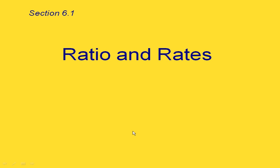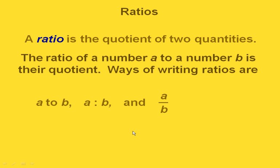This is section 6.1 about ratio and rates. A ratio is just the quotient of two quantities. If we're looking at the ratio of a number A to a number B, it's just their quotient. The number that comes first, the A, goes on top if we're writing this as a fraction. Some different ways of writing ratios are: A to B, A:B with a colon in between, and A over B written as a fraction.